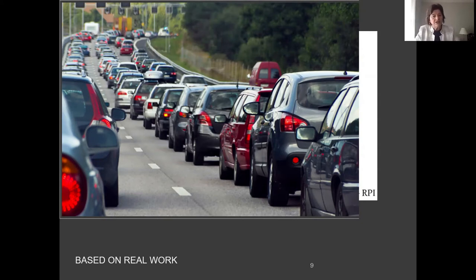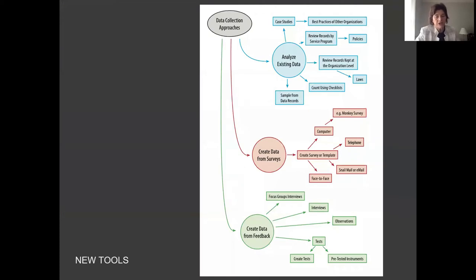Let me go on to the next slide which talks about the new tools I developed. This is a chart about data collection approaches. There are many people in government who may not have statistical sampling, they don't know much about complex tools. But the people on the teams only really need to know these very simple data collection approaches. You can see there are three arms: existing data, creating data from surveys, and creating data from feedback.